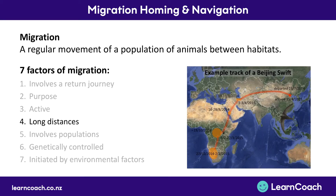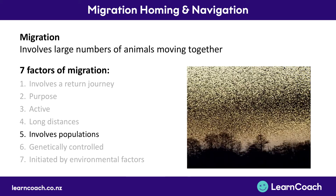Four: migration has to be across long distances. The Beijing Swift travels all the way from the east coast of China down to the bottom of Africa — thousands and thousands of miles. Number five: it involves whole populations. It's not just one bird or a family of birds — the whole population would go all the way to different countries or different environments.